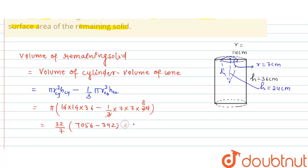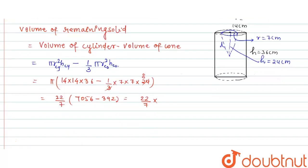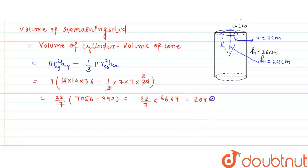So 7056 − 392 = 6664. This gives (22/7) × 6664. Multiplying 22 and dividing by 7, the volume of the remaining solid is equal to 20,944 centimeter cube.